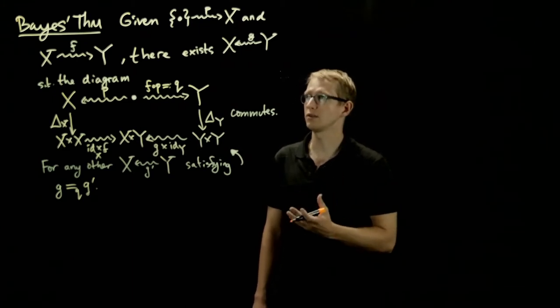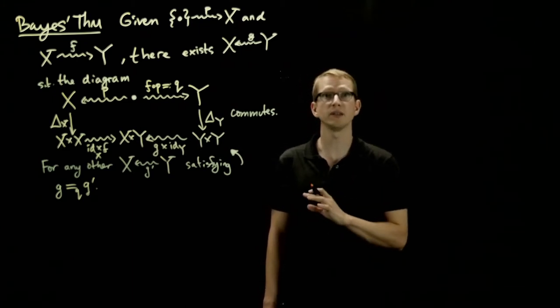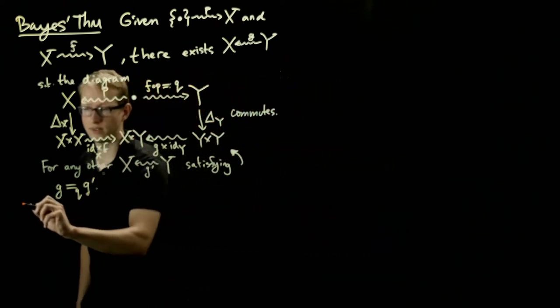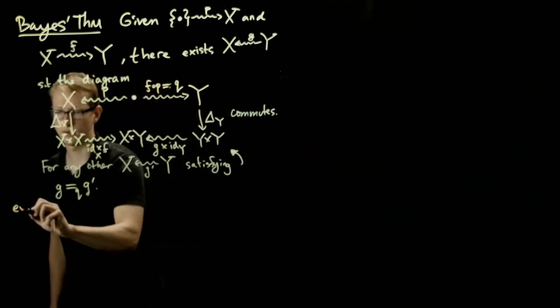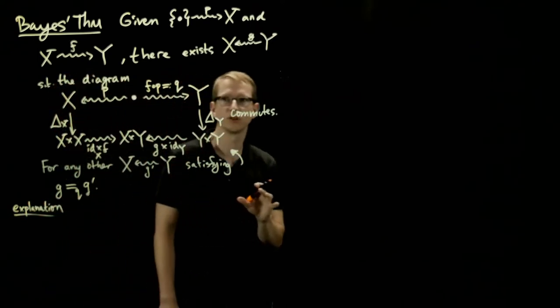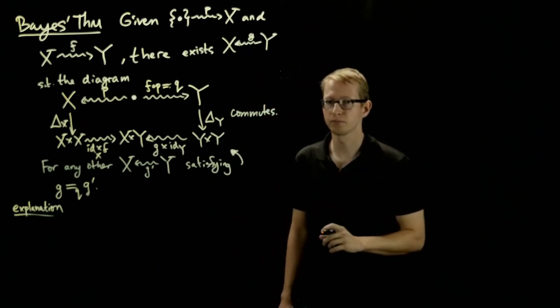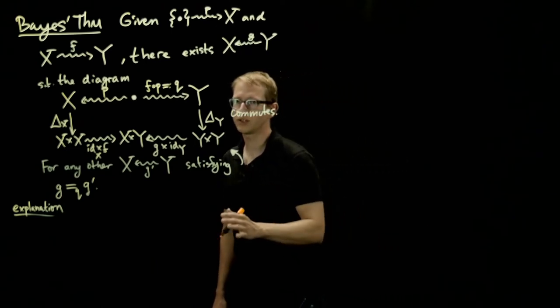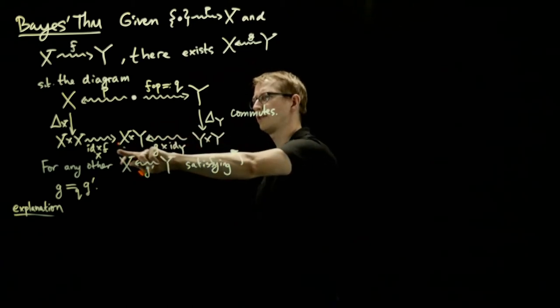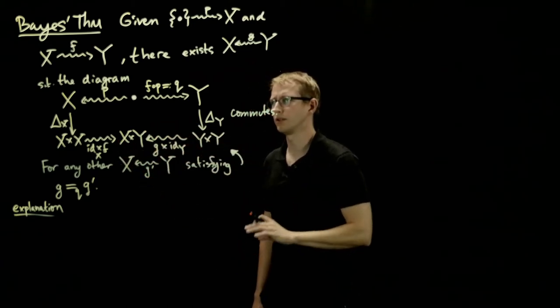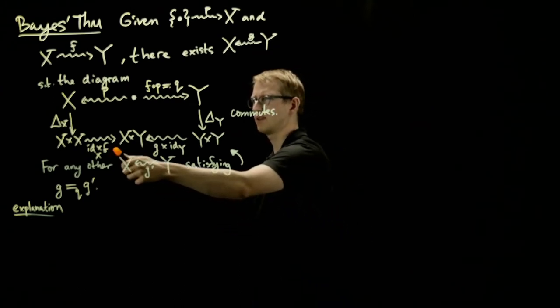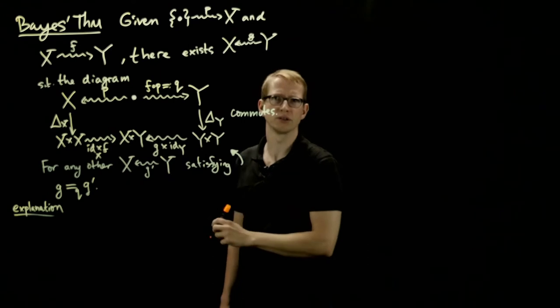And if you've seen Bayes' theorem in a different context, this may seem totally strange, but let's just see exactly what it says when we look at the composition of all of these arrows. We've actually computed expressions just like this. If you remember this left-hand side when we were doing almost everywhere equivalence in the diagrammatic perspective, we computed something, I think it may have been exactly this expression actually.